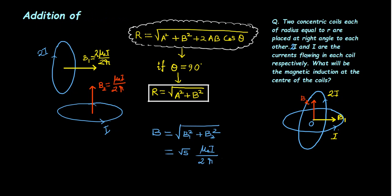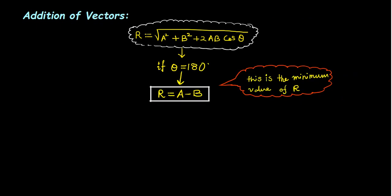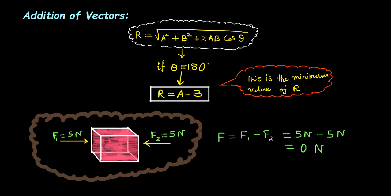Case three: if two vectors are acting opposite to each other, the angle between them is 180 degrees. Substituting 180 degrees for theta, the resultant vector of addition becomes A minus B — even though it is addition, we get A minus B — and this is the minimum possible value of R. For example, if a block is pushed by two opposite forces F1 and F2, the net force is zero.